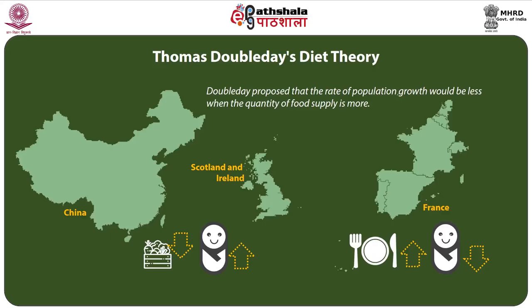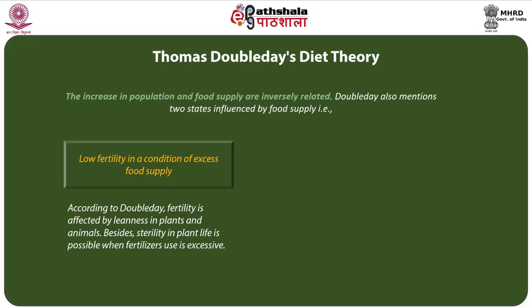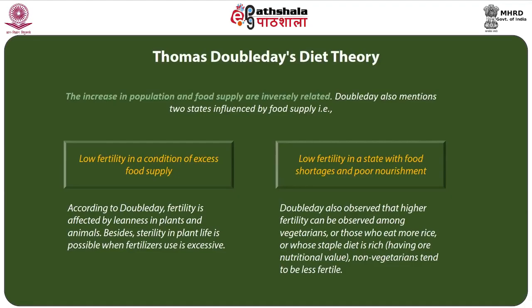Doubleday based his views on a common observation among animals. Rabbits and swans, he said, will not conceive if fed to a certain high degree of fatness. He maintained that while the Chinese, Irish, and Scots were highly fertile because their diet was inadequate, birth rates in France were low because the French were well fed. Doubleday proposed that the rate of population growth would be less when the quantity of food supply is more, meaning that population increase and food supply are inversely related.